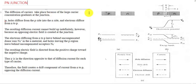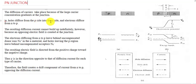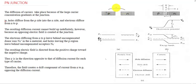When a p-type semiconductor and n-type semiconductor come closer, a depletion region will be formed at the junction. This depletion region is formed by the process of diffusion. The holes, which are the majority carriers in the p-side, will diffuse to the n-region, and similarly, electrons will diffuse from the n-region to the p-region when a p-n junction is formed.